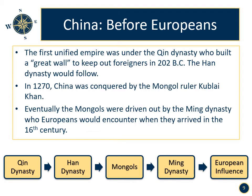China before Europeans. The first unified empire was under the Qin dynasty, who built a great wall to keep out foreigners in 202 BC. The Han dynasty would follow. In 1270, China was conquered by the Mongol ruler Kublai Khan. Eventually the Mongols were driven out by the Ming dynasty, whom Europeans would encounter when they arrived in the 16th century. China under the Ming dynasty gained Korea, Vietnam, Laos, Cambodia, and other regions within Asia as tributary states.